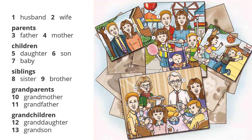Family members one. Listen and practice the words. Husband. Wife. Parents. Father. Mother. Children. Daughter. Son. Baby. Siblings. Sister. Brother. Grandparents. Grandmother. Grandfather. Grandchildren. Granddaughter. Grandson.